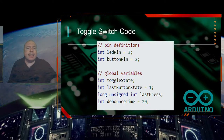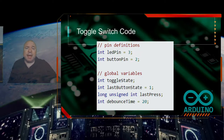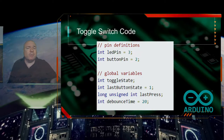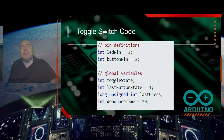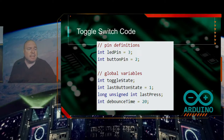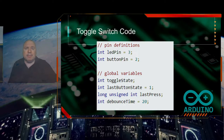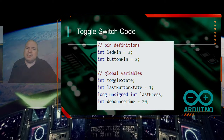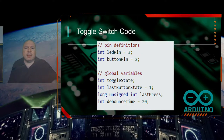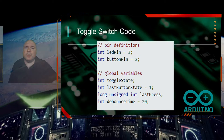We also have 'long unsigned int last press,' which is important for keeping track of time — we'll look at what long unsigned int means in a moment. Finally, the last variable is debounce time, set to 20. We'll look at what debounce means as we get deeper into the code.